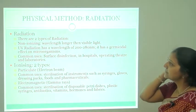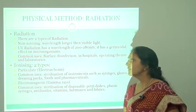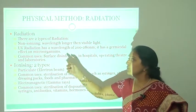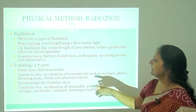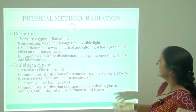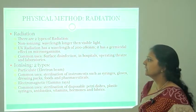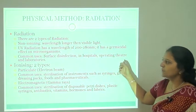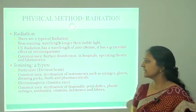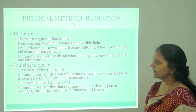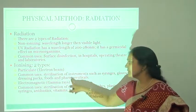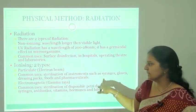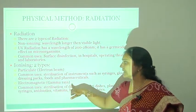Another method for sterilization is radiation. There are two types: non-ionizing radiation, in which the wavelength is longer than visible light — UV radiation has a wavelength of 200 to 280 nanometers and has germicidal effects on microorganisms, commonly used to sterilize surfaces in hospitals, operation theatres, and laboratories. Ionizing radiation has two types: particulate — the electron beam — used for sterilization of instruments such as syringes, gloves, dressing packs, foods, and pharmaceuticals; and electromagnetic waves such as gamma rays.